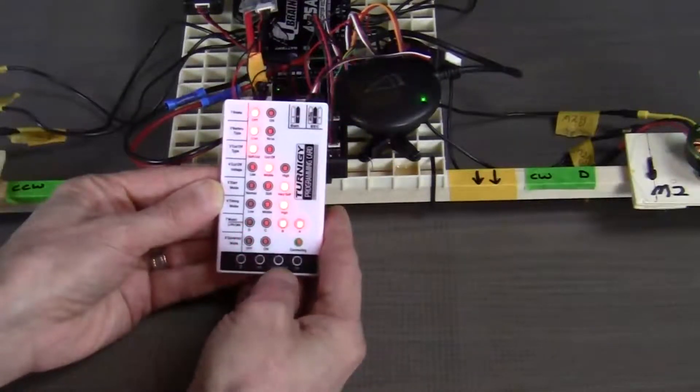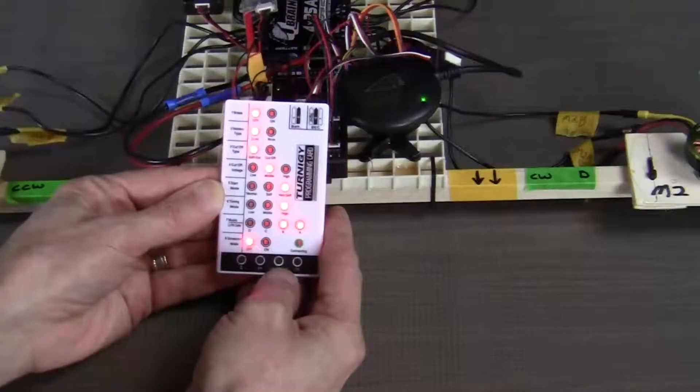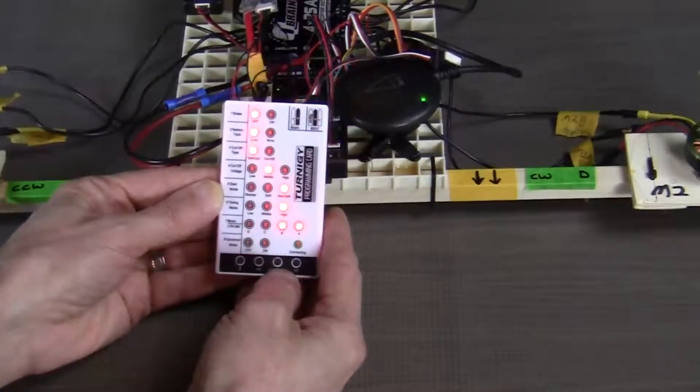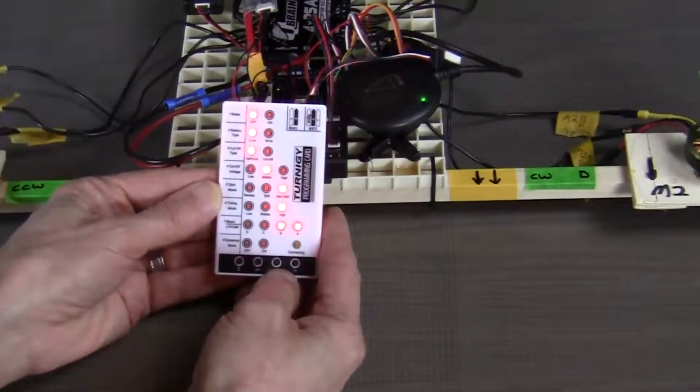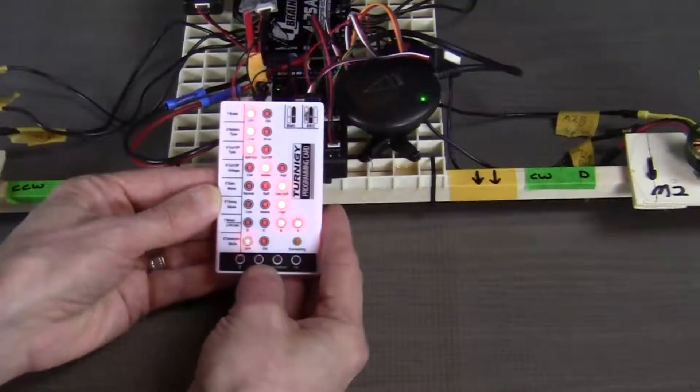Now let's move down to the governor mode. Basically, the governor mode determines how the ESC will adjust the lift produced by each motor. Our choice for this build is to set the governor mode to off, but you can feel free to experiment with that one.